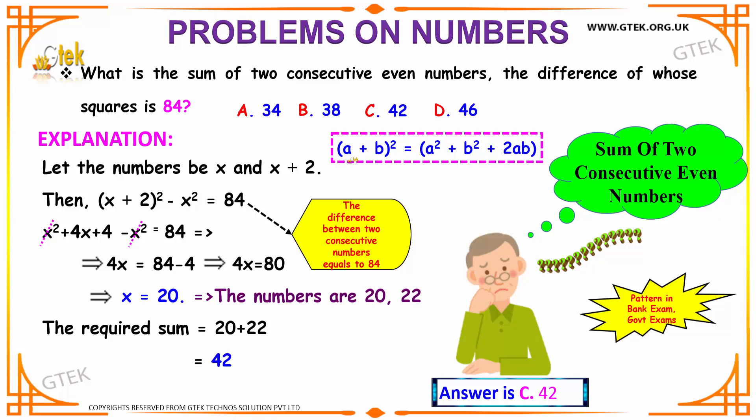Using the formula a plus b the whole square is equal to a square plus b square plus 2ab, we can expand this one as x square plus 4x plus 4 minus x square is equal to 84. Cancel out the positive and the negative x square. You get 4x is equal to 84 minus 4.